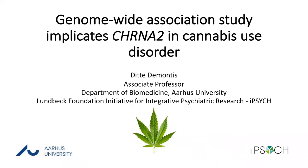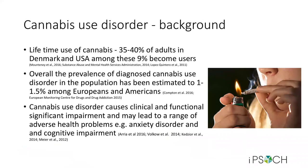This study will be about our genome-wide association study, which implicates CHRNA2 in cannabis use disorder. First, a little bit about the background: lifetime use of cannabis has been found to be around 35 to 40% of adults in Denmark and the United States, and among these, around 9% become regular users. The overall prevalence of diagnosed cannabis use disorder has been estimated to be around 1 to 1.5% among Europeans and Americans.